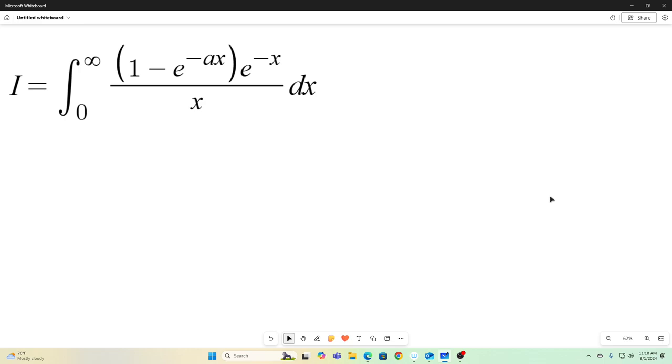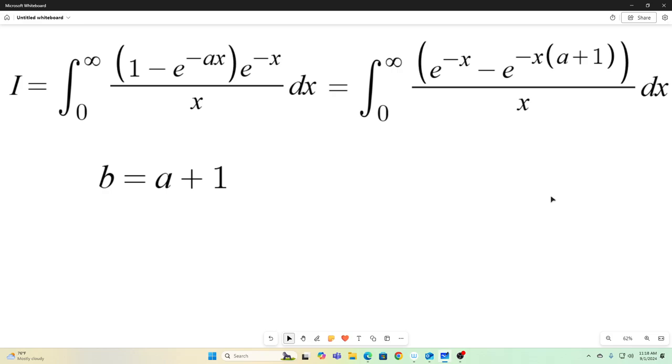First thing we're going to do is distribute that e to the negative x. These integrals are equivalent. I just distributed that e to the negative x inside the parentheses and then factored out a negative x. And the next step is kind of arbitrary. Since a plus one is just a constant, I'm going to let it equal b and just solve the integral from there.